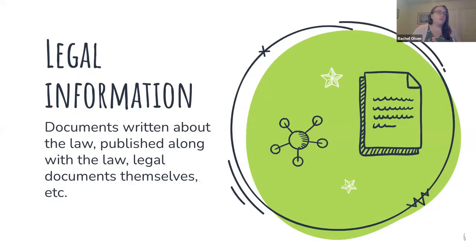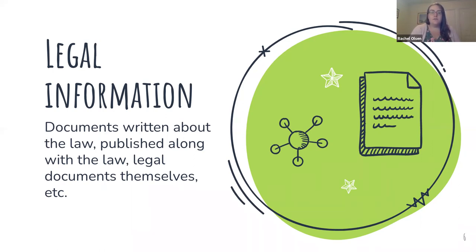So what is legal information? Legal information means documents written about the law, published along with the law, the actual legal documents themselves, things like that. This can mean a wide variety of things. Legal information isn't just the text of the law. We're going to look at it from a variety of different angles today. Legal information is a very broad term.